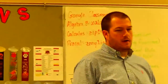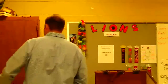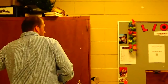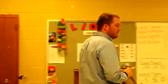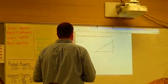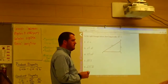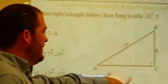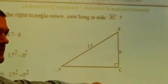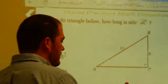Alright, guys, focus. We have a — what's special about this triangle? It actually says it in the thing. It's a right triangle. So what theorem can we use to figure out what this side length is? The Pythagorean theorem.